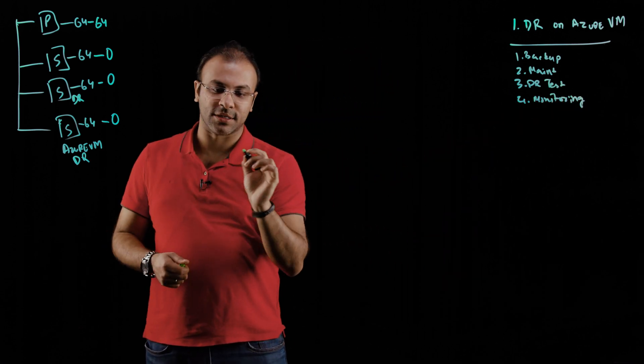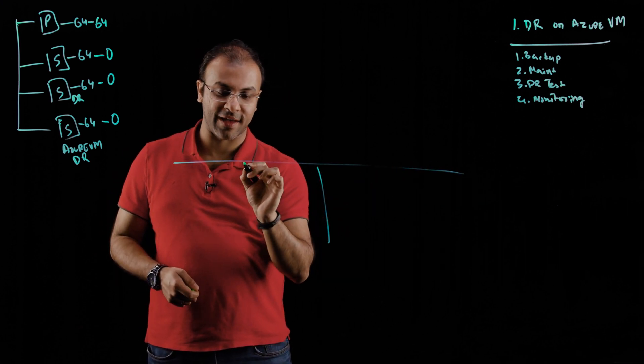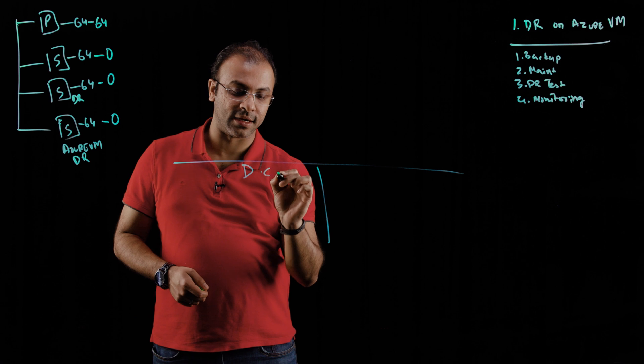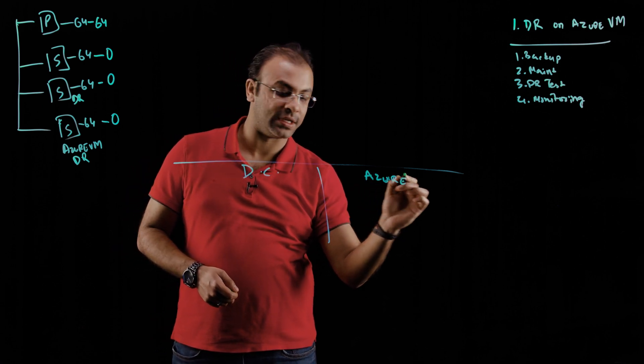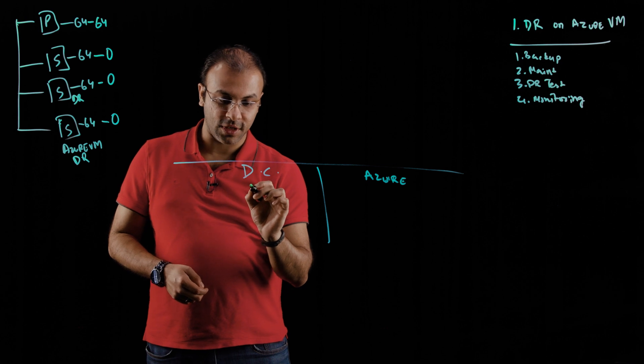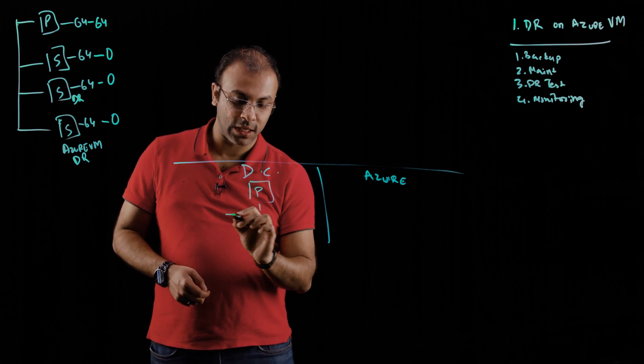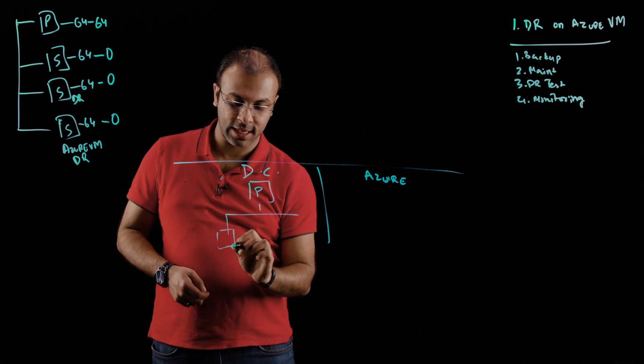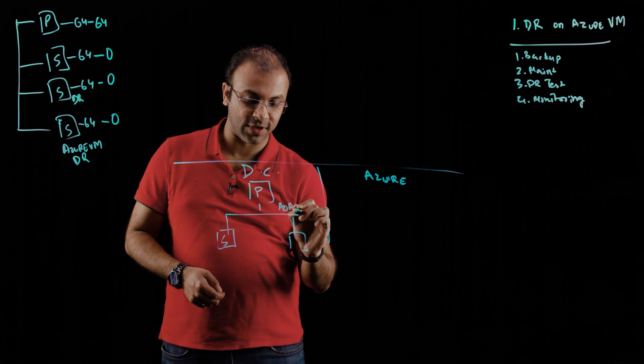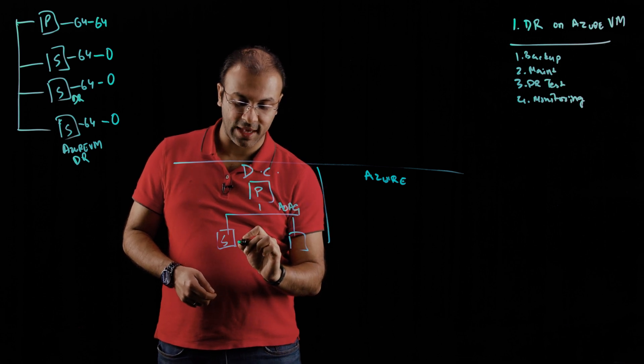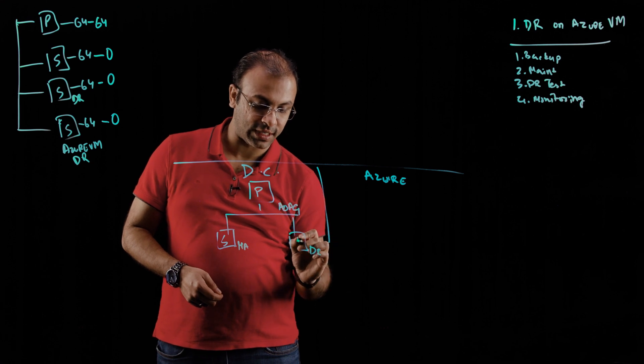Now, in this scenario, the architecture would become pretty simple where you have, let's say, a data center residing on-prem, and you use Azure as your DR site. So, if you have this architecture where you have a primary replica utilizing a secondary, and let's assume that we're using always-on availability groups here, you have a secondary which is used for HA, and a secondary which is used for DR.